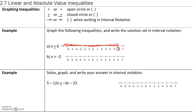For x greater than negative 2: first we ask whether negative 2 is included. In this case, negative 2 is not included because we want x to be strictly greater than negative 2, so we will have a parenthesis on negative 2. This time, we want all numbers greater than negative 2 — like negative 1, 0, 1, 2, 3, 4 — so these numbers approach positive infinity, and we have an arrow to indicate that.